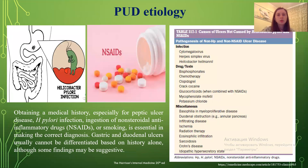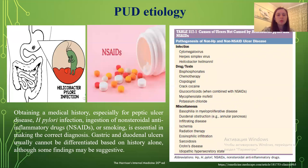Regarding etiology, obtaining a medical history, especially for Peptic Ulcer disease, Helicobacter pylori infection, use of non-steroidal anti-inflammatory drugs, or smoking is essential in making the correct diagnosis. Gastric and duodenal ulcers usually cannot be differentiated based on history alone, although some findings may be suggestive.